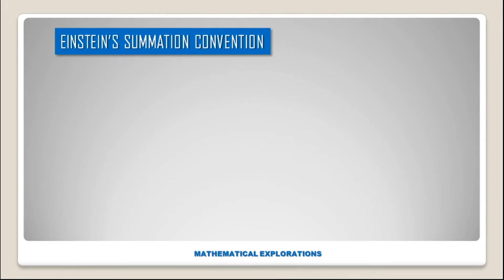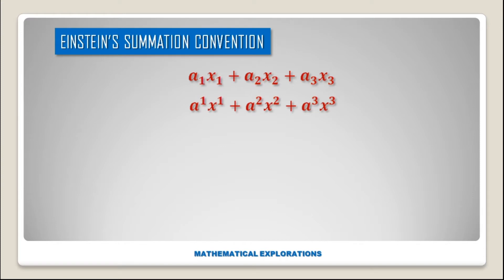Hello everyone, welcome to Mathematical Explorations. Einstein's summation convention: let us consider the expression a1x1 plus a2x2 plus a3x3. Here, 1, 2, 3 are known as indices in tensor. We also write this type of expressions where the indices are in the upper position.